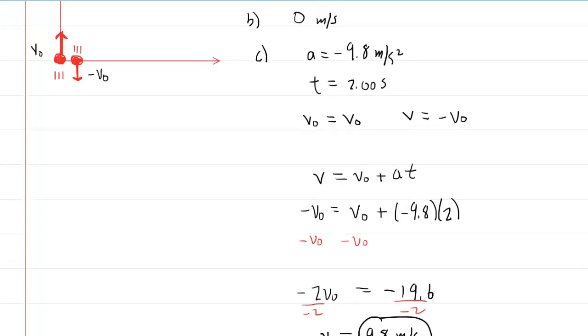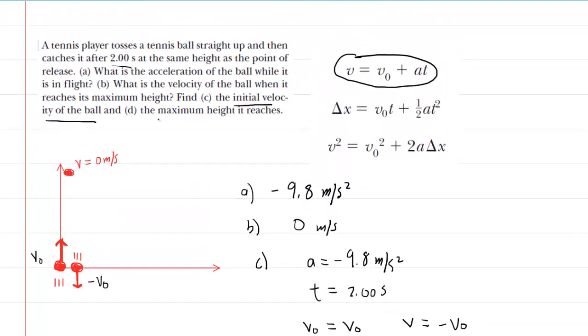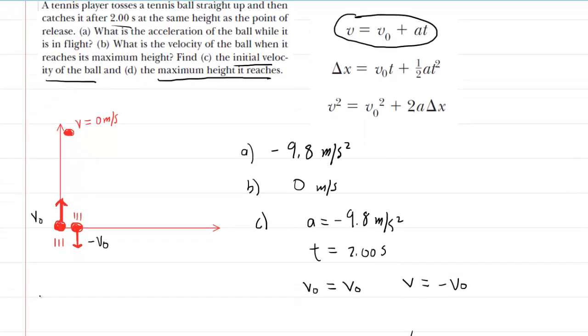We move back up and look at part D, which wants the maximum height that the ball reaches. So now we're going to write down some values that we would know in order to solve this part of the question. We, of course, now know that the initial velocity is positive 9.8 meters per second. The acceleration is the negative 9.8 meters per second squared.